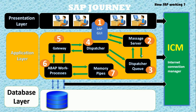This is the work process — how SAP is working. In the presentation layer there are many users using the SAP GUI. SAP works only on T-codes, transaction codes. These users run the SAP GUI and through it they send transaction codes. The transaction passes from the GUI to the message server, and the message server passes the request to the dispatcher queue.